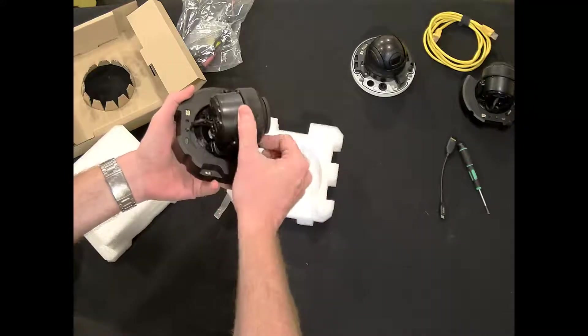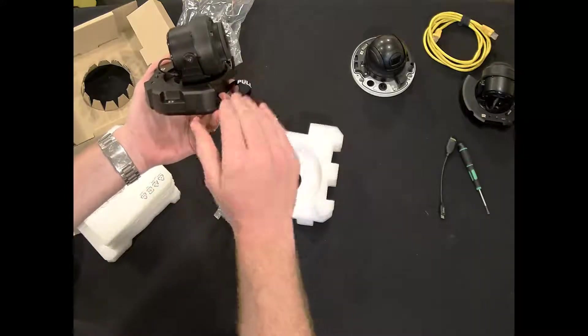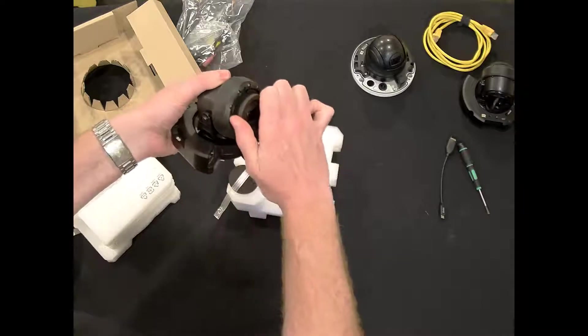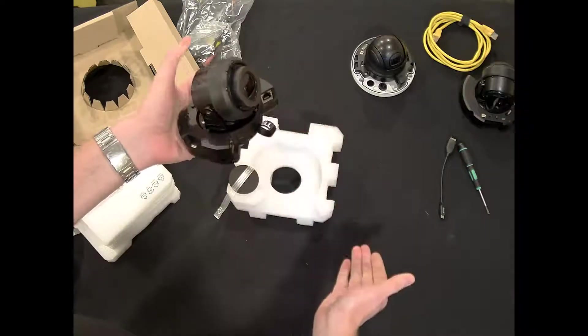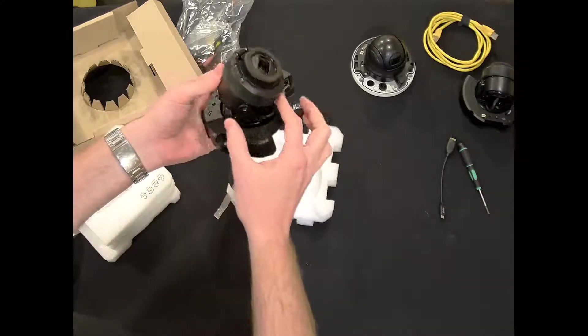You can see we can tilt the lens in both directions. The tilt is almost a horizontal adjustment there. We can change our rotation right from the front. Some of our older cameras, the rotation was on the back, so we made it even easier to work with there.